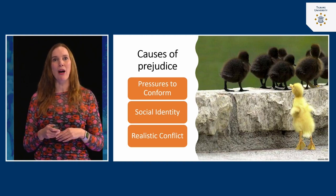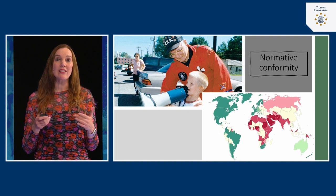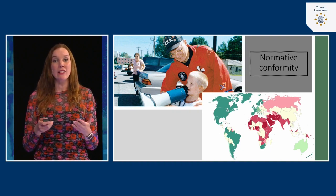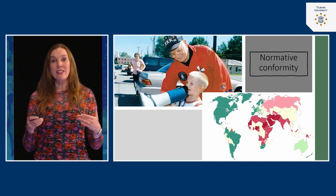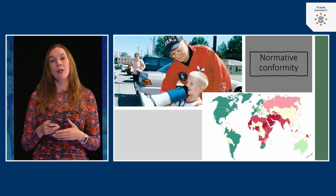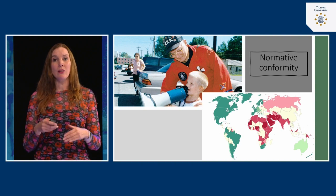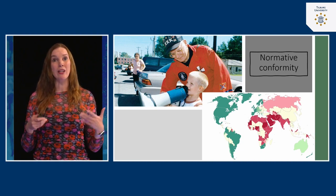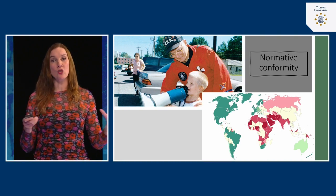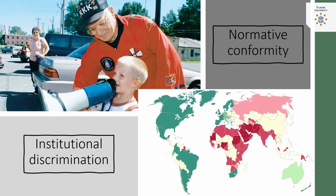The first cause is pressures to conform — it has to do with the society that we live in. If we live in a society, we tend to show normative conformity: we want to behave in a way that is condoned by society. If you live in a part of the world where there are very strong prejudices against a certain minority group, we tend to imitate this. If you're brought up by racist parents or grandparents, you simply learn that people from minority groups are inferior. This becomes so normal that you just go along with it. Laws in a certain area or country also play a big role.